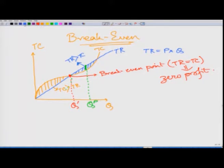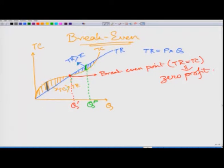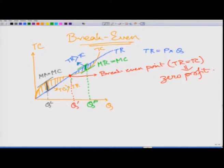Eventually, where the vertical distance between total revenue and total cost is maximum and total cost is higher than total revenue, I am making the maximum loss. At both these extreme points, the slope between marginal revenue and marginal cost are equal — meaning MR equals MC — but at one point I get maximum loss and in the blue shaded region, where total revenue exceeds total cost, I get maximum profit.